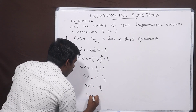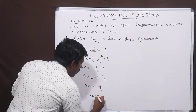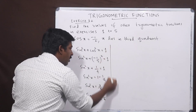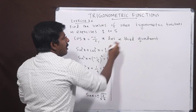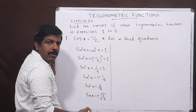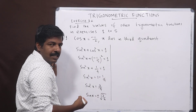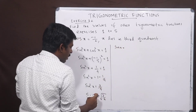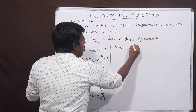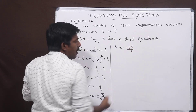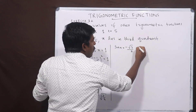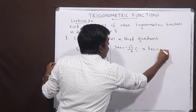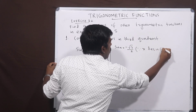Then sin x is equal to plus or minus square root of 3 by 4, which simplifies to plus or minus root 3 by 2. The answer is negative because x lies in the third quadrant, so sin x is equal to negative root 3 by 2.